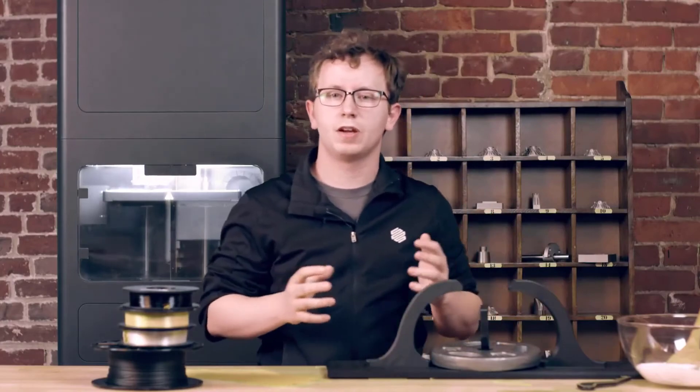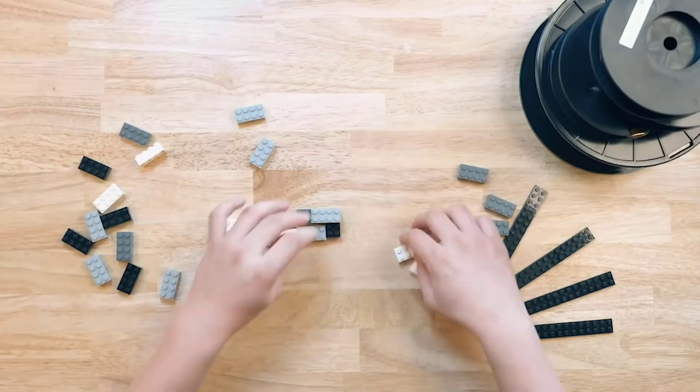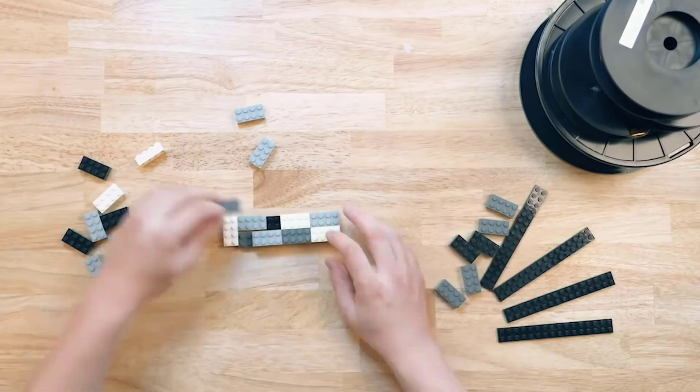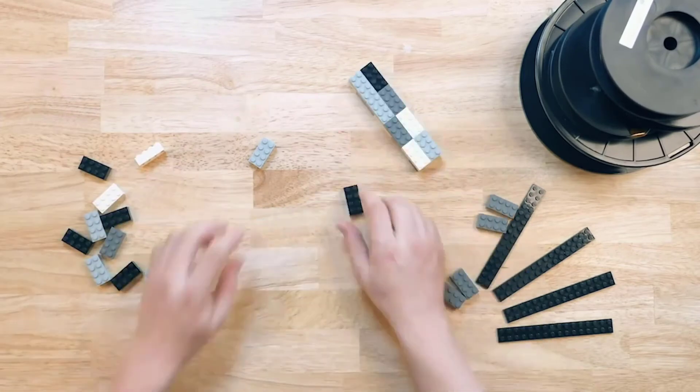So chopped fibers are basically a bunch of little pieces of a strong material adhered together in some way, like how these bricks are held together by their connection points.